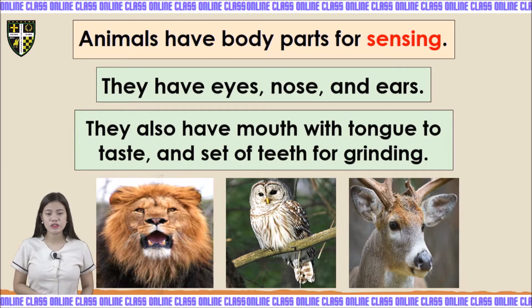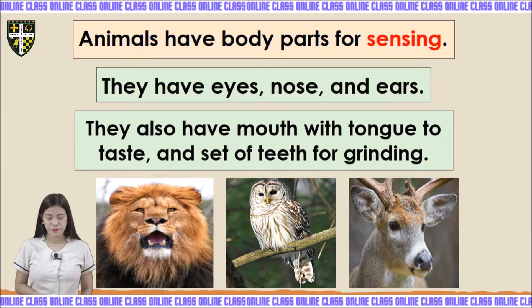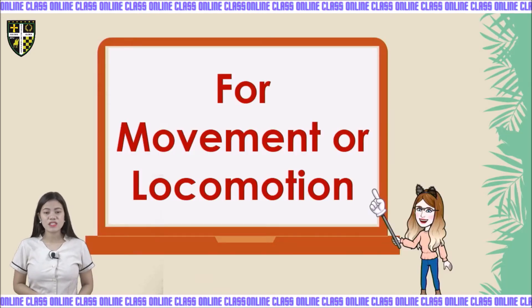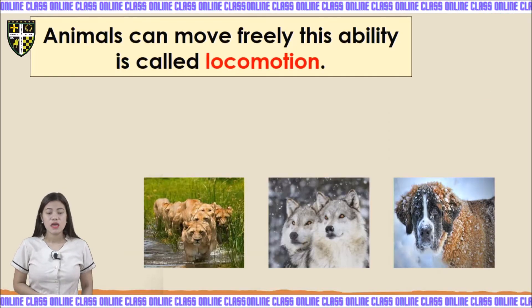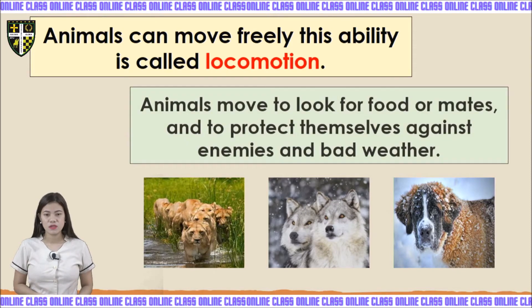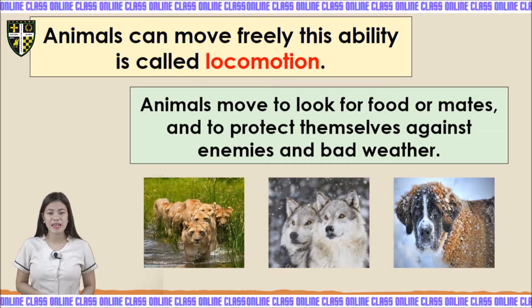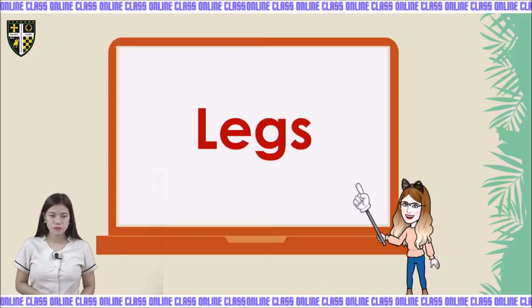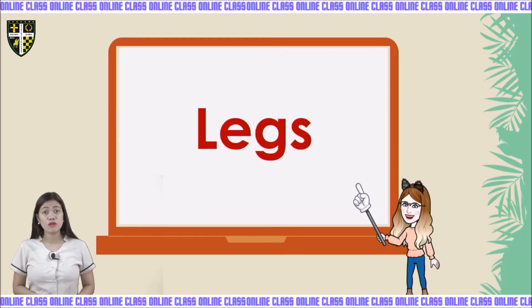As you can see on the monitor, we have the lion. Next we have movement or locomotion. Animals can move freely — this ability is called locomotion. Animals move to look for food or mates, and to protect themselves against enemies.